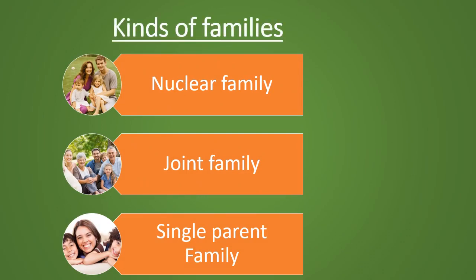Kinds of families: nuclear family, joint family, single parent family. We have already learned about the kinds of families. First is nuclear family — a small family in which only parents and children stay together. Joint family is a large family in which grandparents, uncles, aunts and their children all live together in a single family. Single parent family is a family in which a single parent, either mother or father, lives with their children.